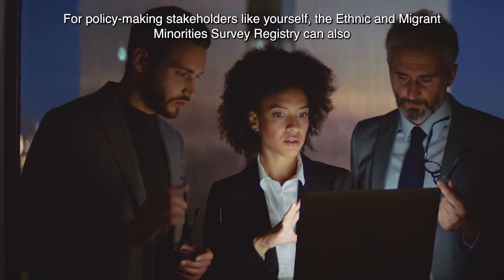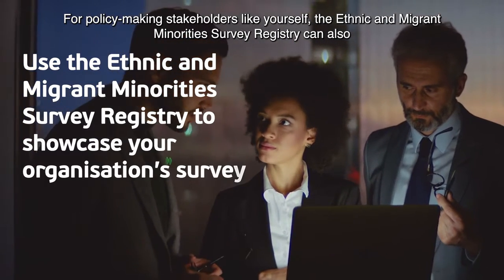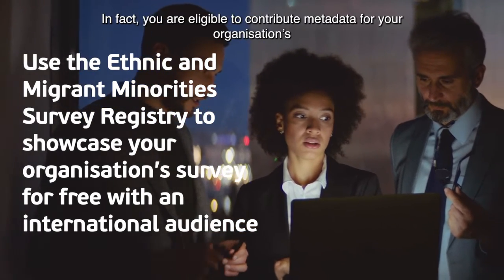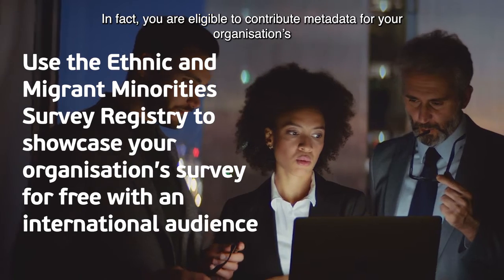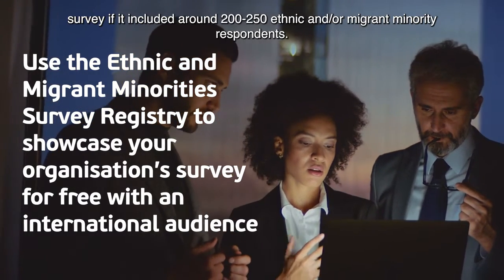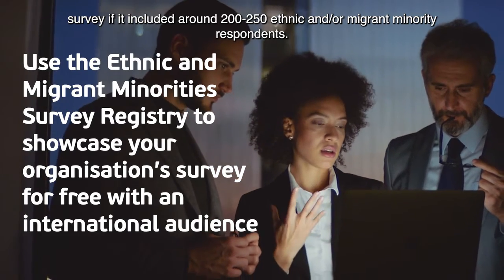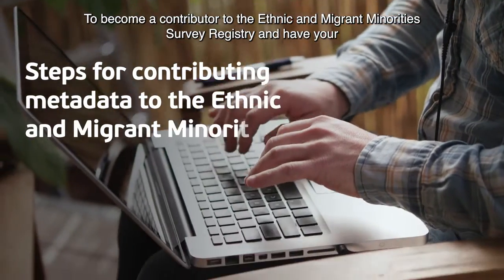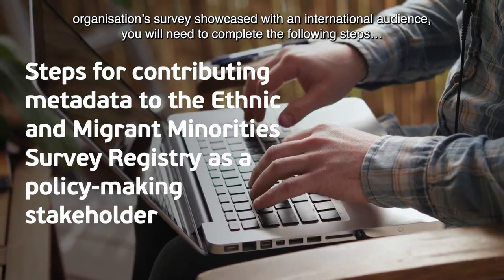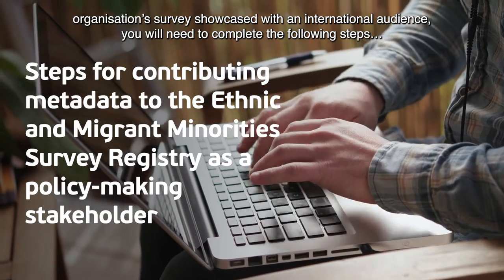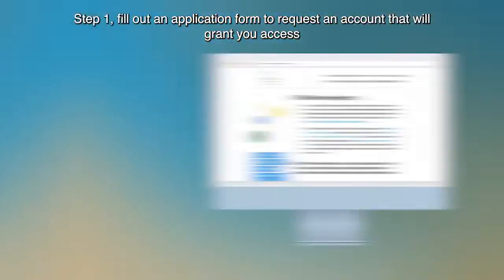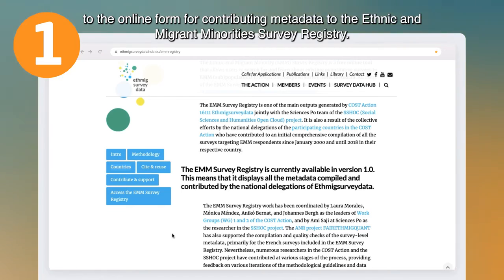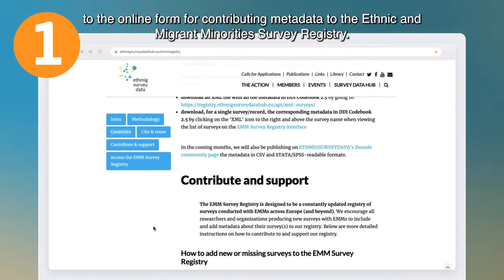For policymaking stakeholders, the Ethnic and Migrant Minorities Survey Registry can also be a great resource for showcasing surveys your organization has been involved in. You are eligible to contribute metadata for your organization's survey if it included around 200 to 250 ethnic and/or migrant minority respondents. To become a contributor, you will need to complete the following steps. Step one: fill out an application form to request an account that will grant you access to the online form for contributing metadata.